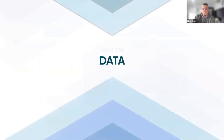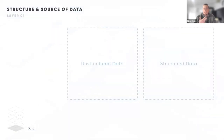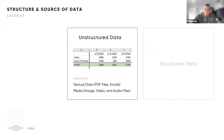Layer one is data. I think this layer is pretty self-explanatory, but there are a few basics to touch on. One is that there are different types of data you can connect to — unstructured and structured. An example of unstructured data is an Excel file with dates across the top, no column headers, and entire columns whose sole purpose is to create a border between labels. If we load this into Tableau, we might be able to use it but it won't be very efficient.